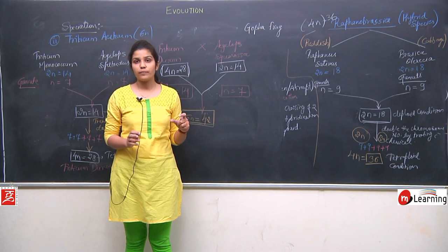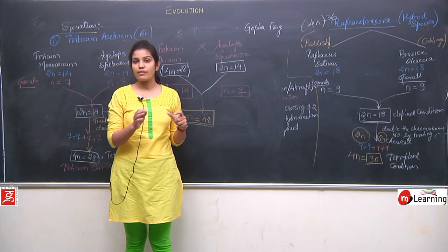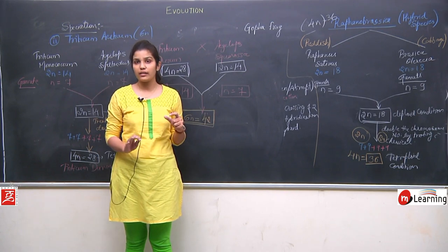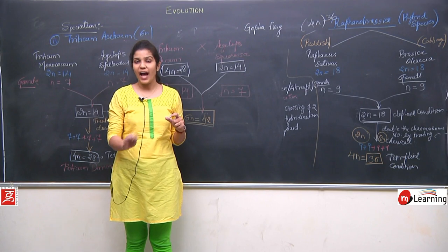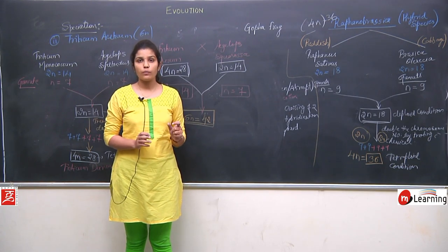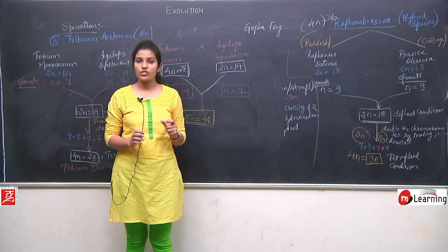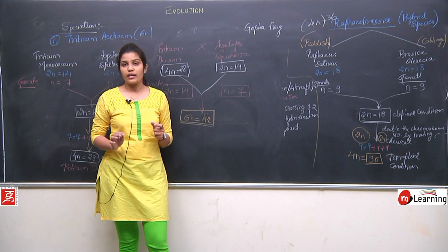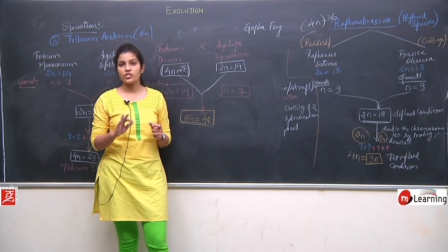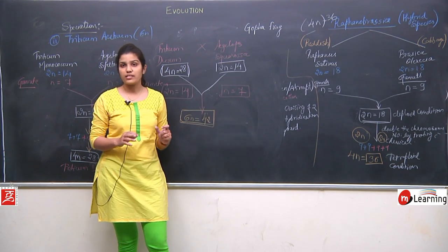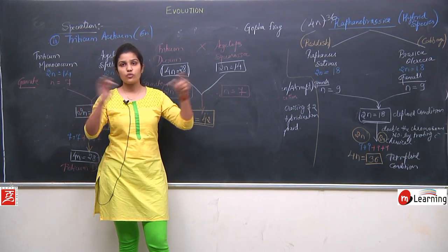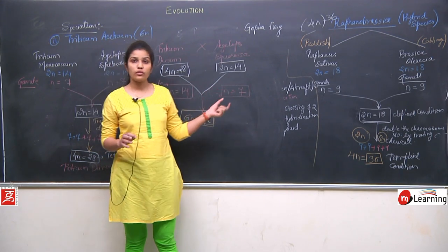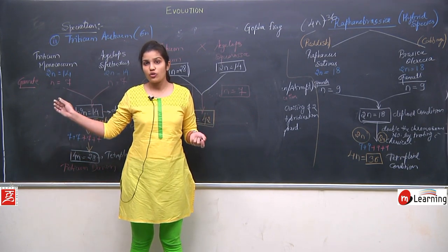In sympatric speciation, new species are formed when one species is living in the same geographical area with no barrier. They still form new species because of differences in their ecological niche. In instant speciation, there are two means: mutation and hybridization. When two different species cross over with each other, hybridization occurs. We took the examples of Raphanobrassica and Triticum aestivum for hybridization.